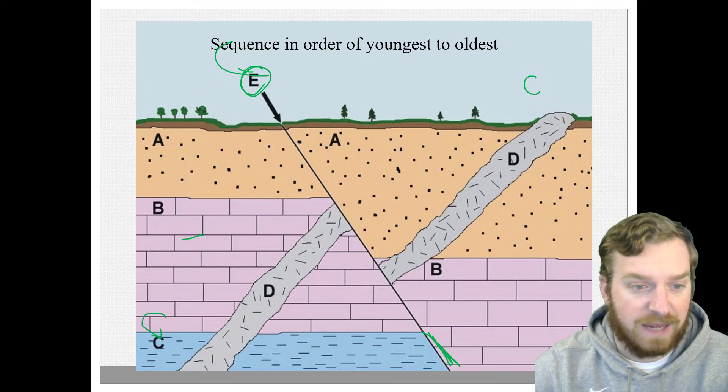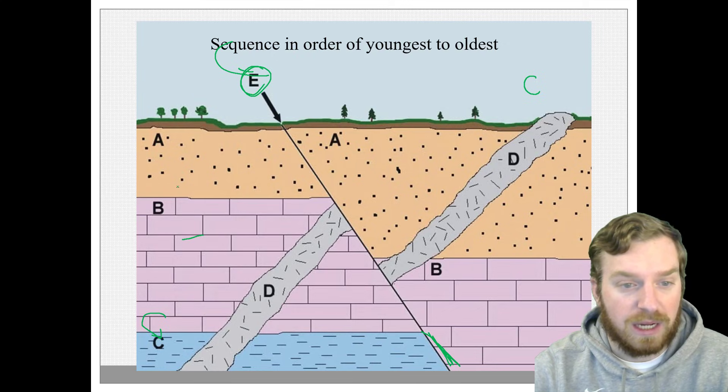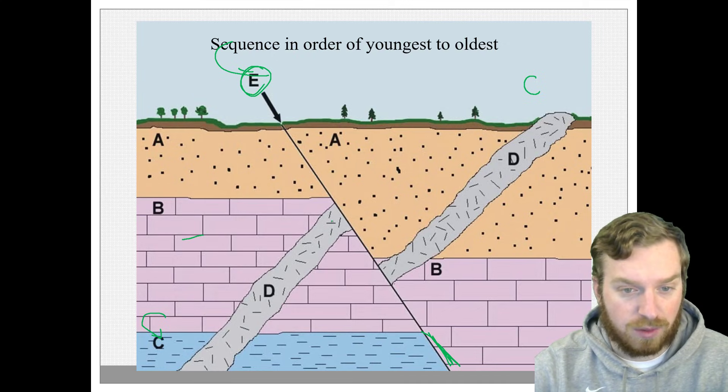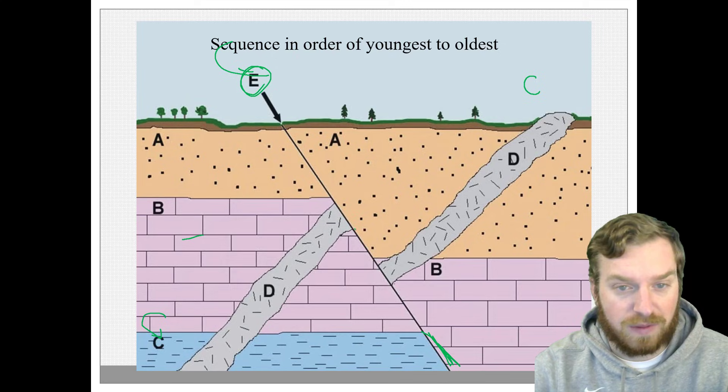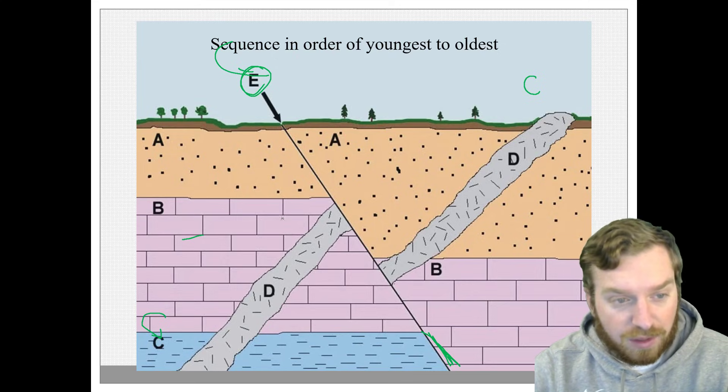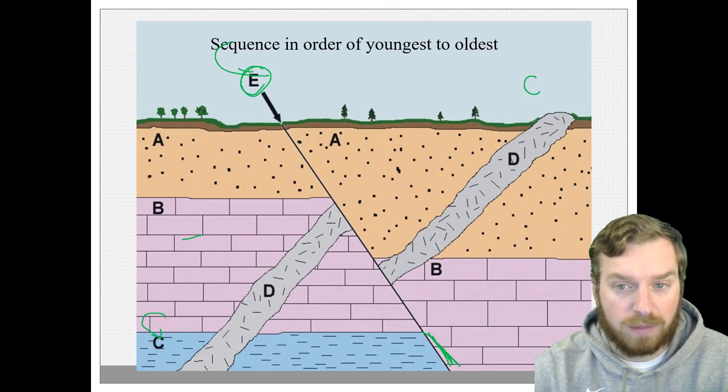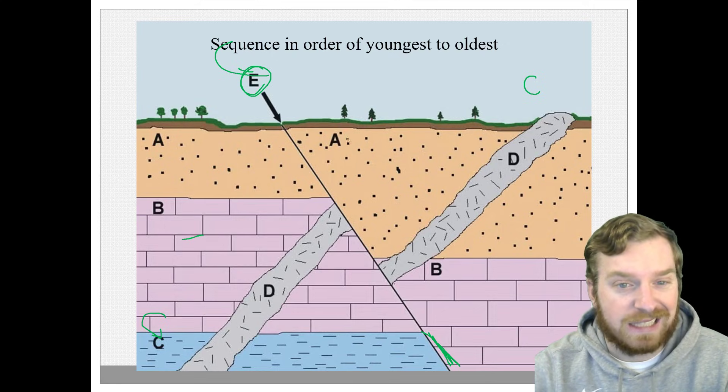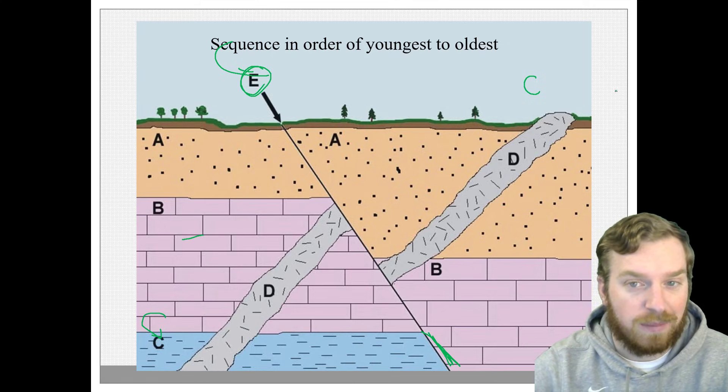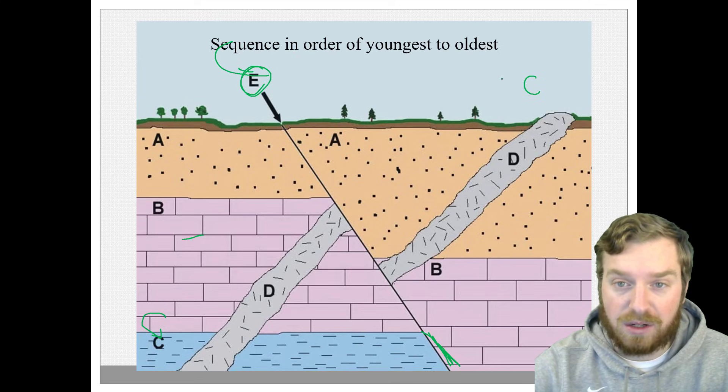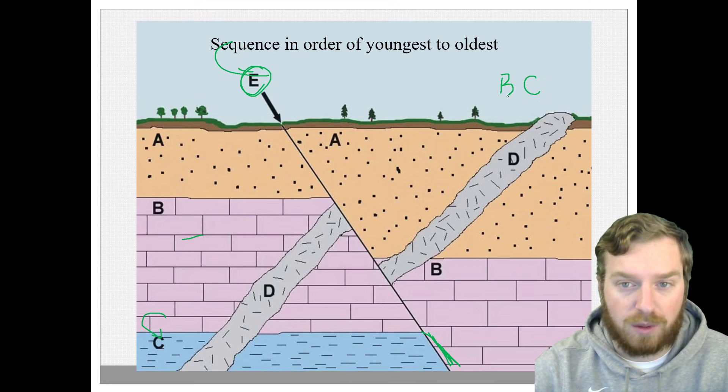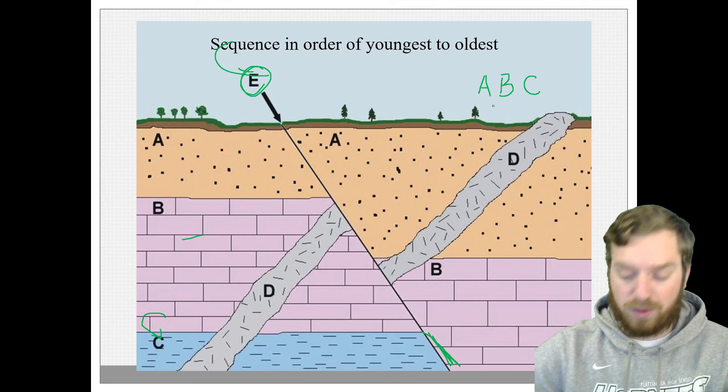And that same logic can be used for B and A as well. B and A also have the intrusion cut through it. They also have the fault line cut through it. So that means the fault line and the intrusion had to happen after B and A had already formed. And because A is generally horizontally on top of layer B, we could say that A is younger than B. So C is going to be our absolute oldest in this picture. B is going to be our second oldest and A is going to be our third oldest.